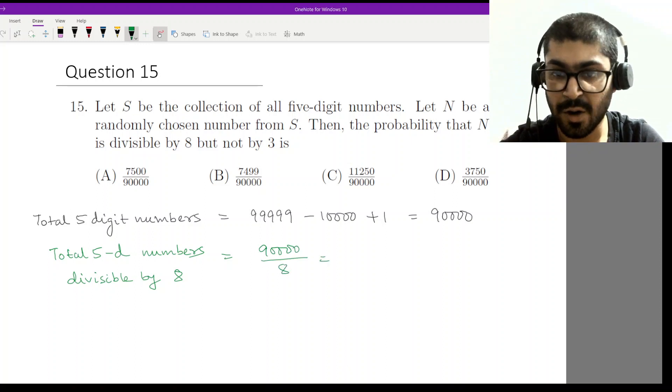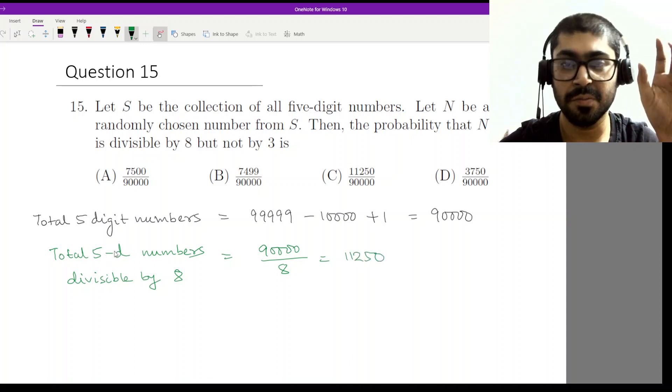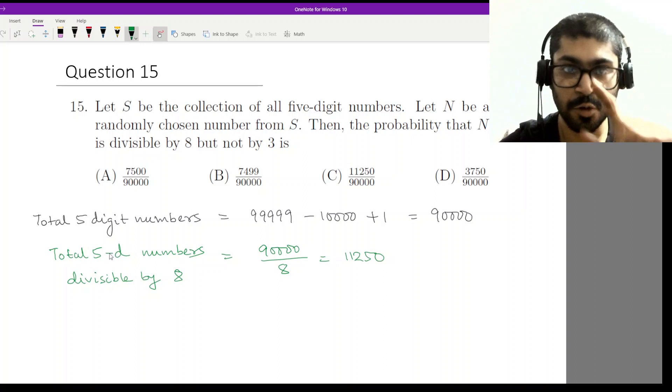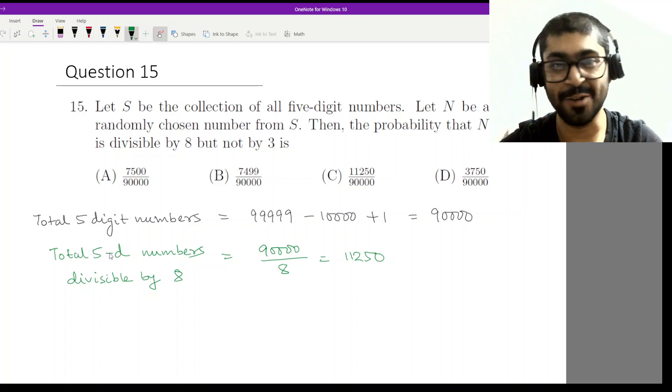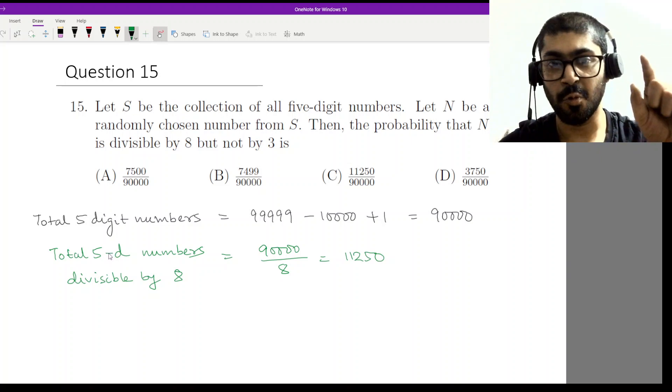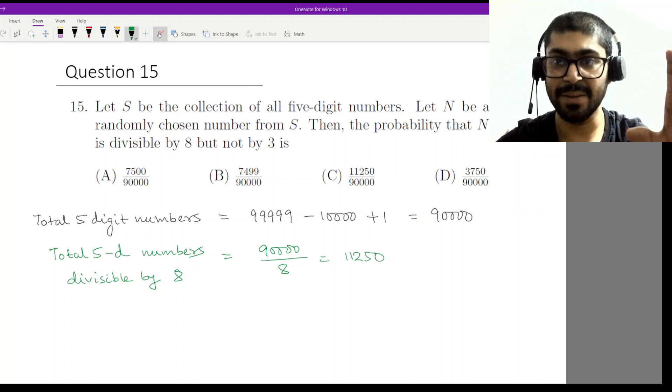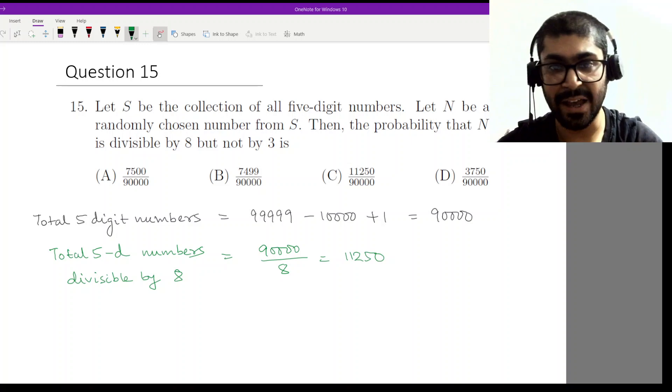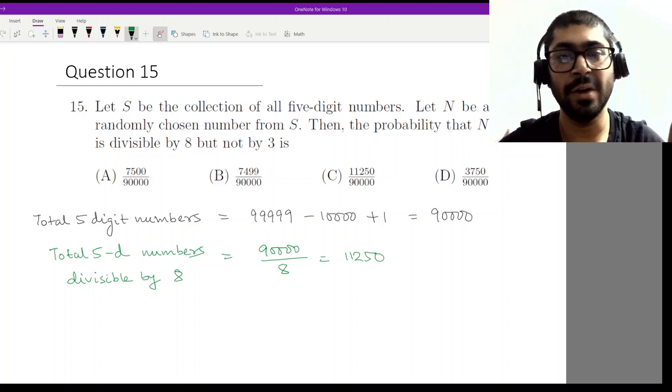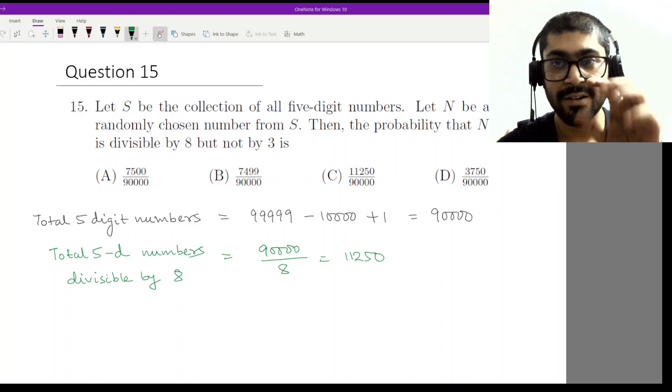Now I have to exclude the numbers that are divisible by 3. In this 11,250 numbers, there are some numbers divisible by 3. They are already divisible by 8, so if in addition to 8 they are divisible by 3, they should become divisible by 24.